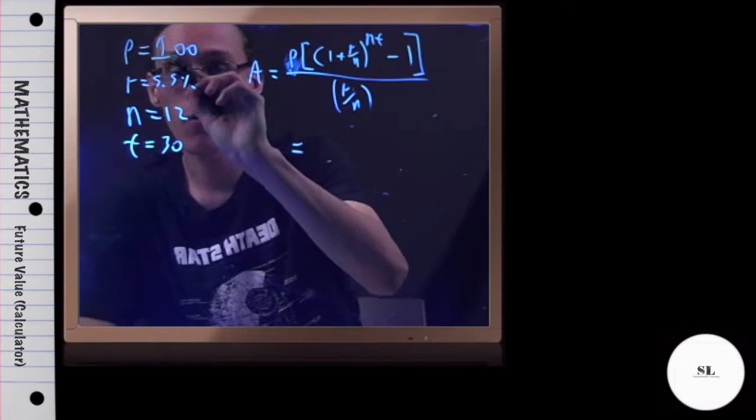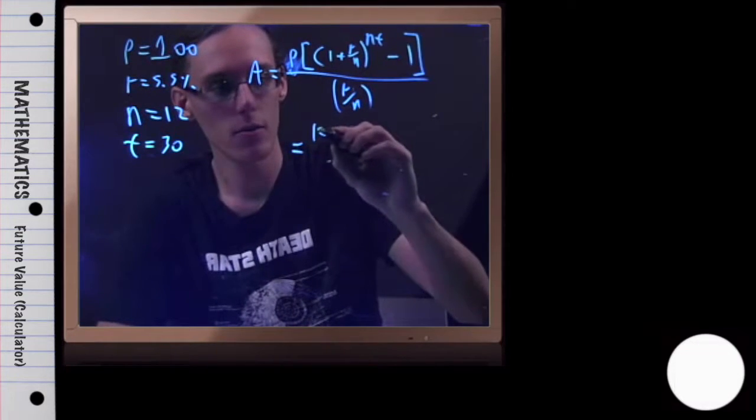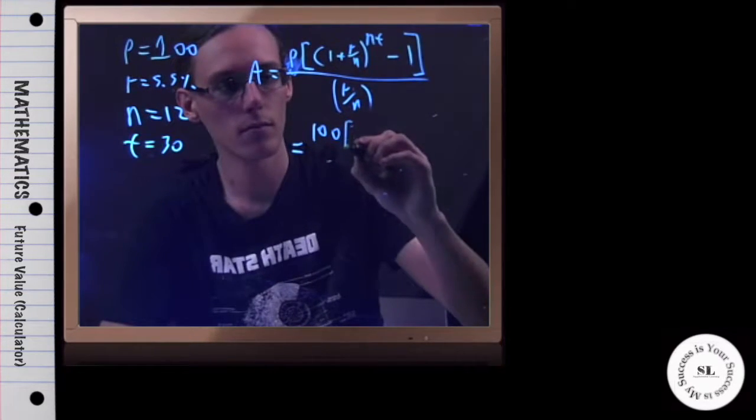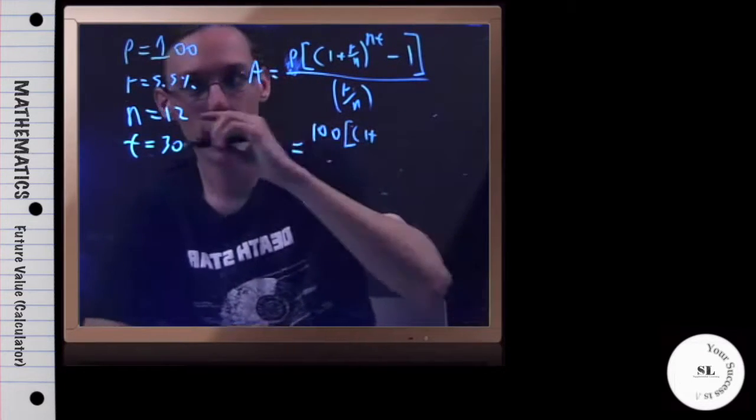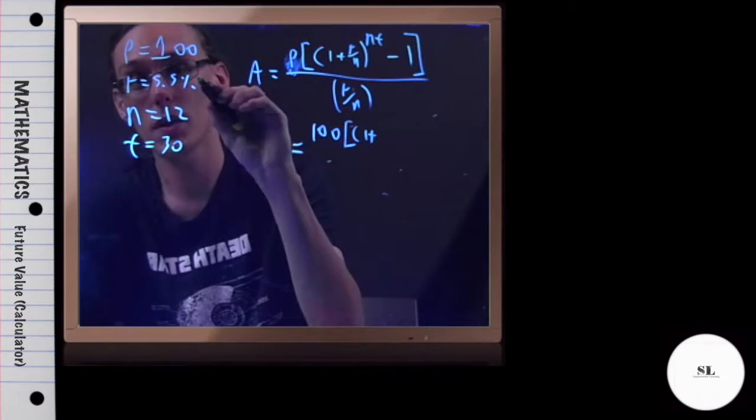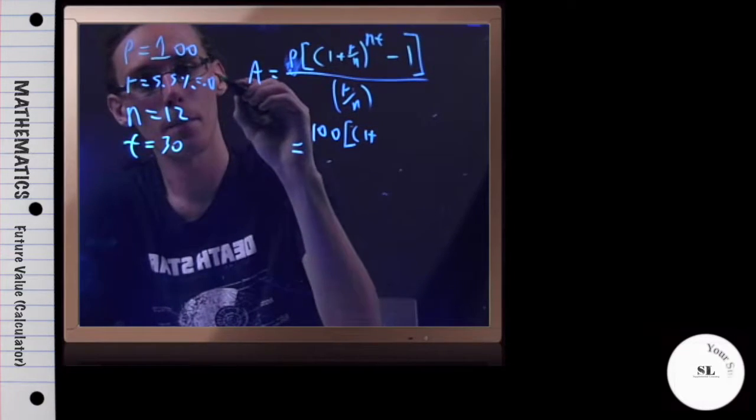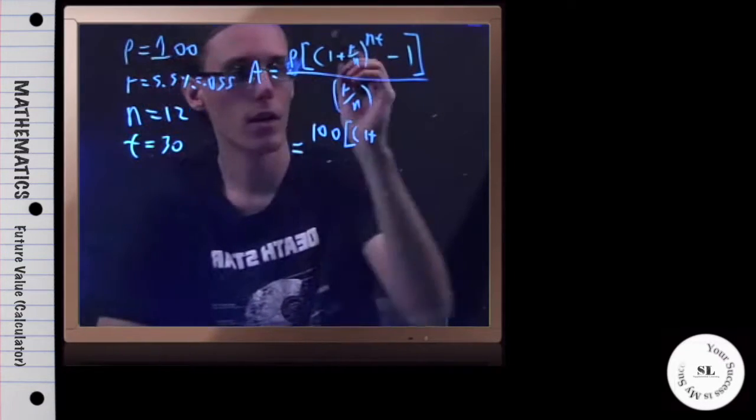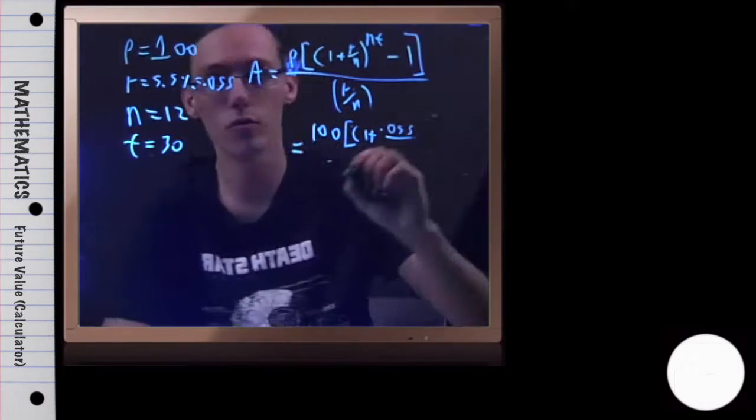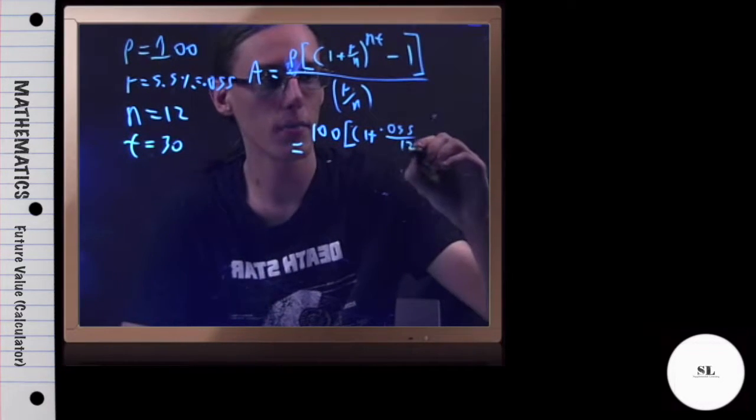So the payment amount we're making at the end of each month is $100, 1 plus—now whenever I use a percentage in these formulas, it needs to be a decimal. So take this decimal two hops to the left, and we get 0.055 over 12, because it's compounded monthly.